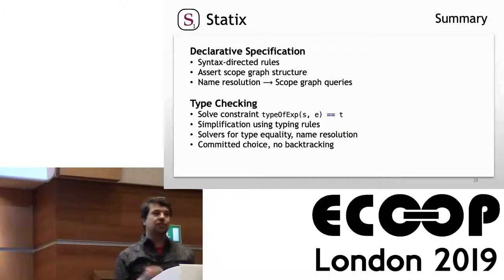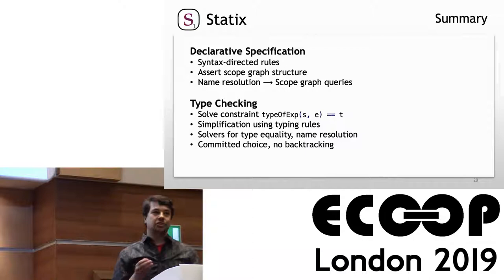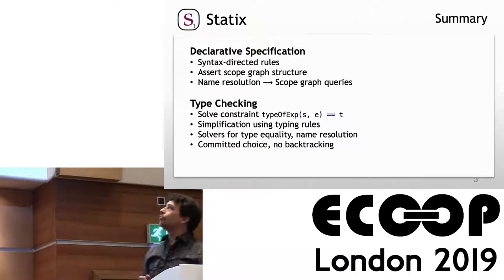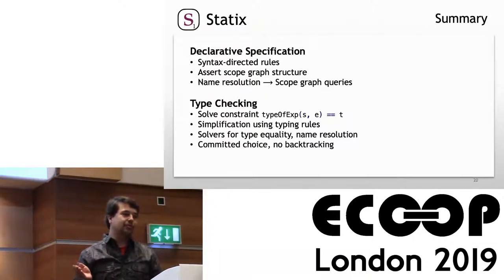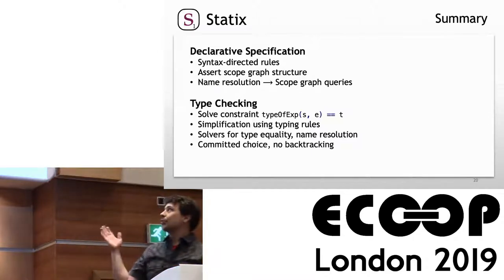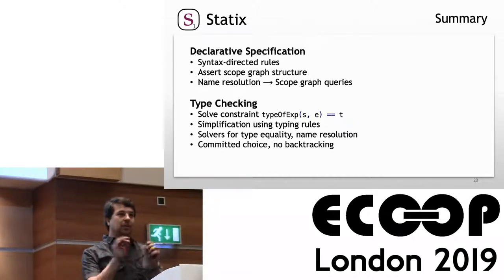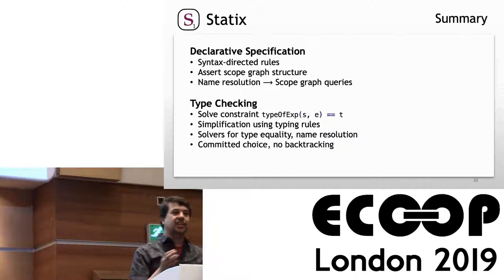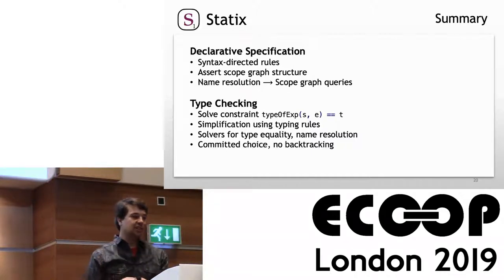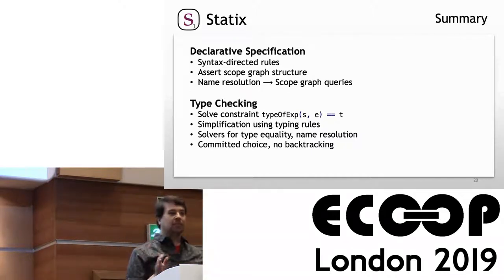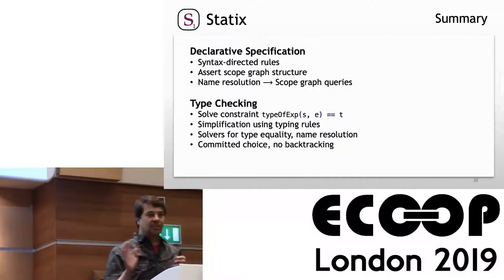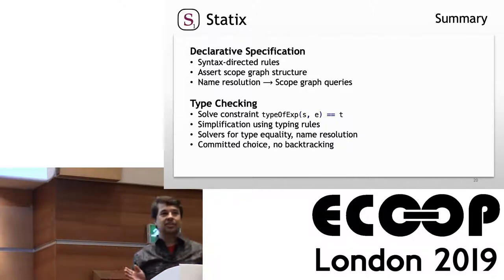This allows syntax-directed rules describing the semantics of the program that also assert structure in the scope graph. Name resolution is just queries in the scope graph. We solve constraints like 'the type of expression equals some type,' simplify them, and end up with core constraints that are equality checking or resolving a reference. But the solver is very simple — once committed to a choice, there's no backtracking. It cannot guess values; it's deterministic.